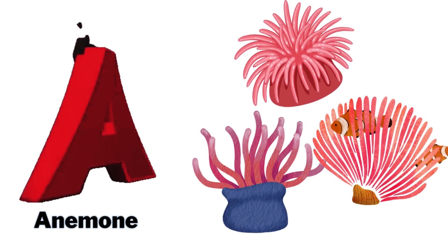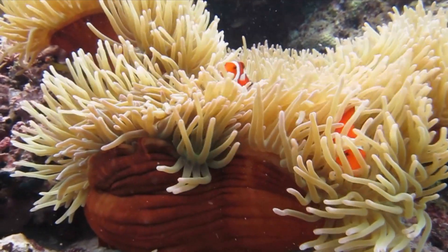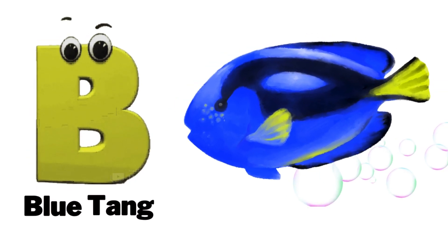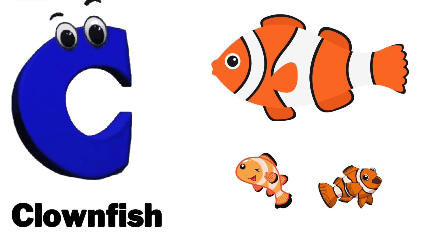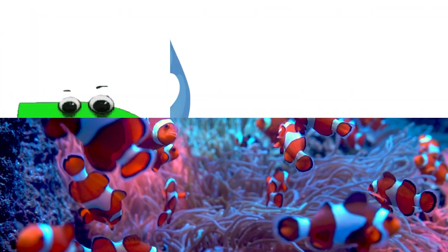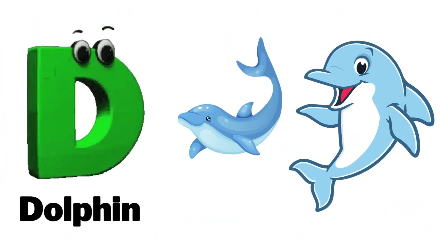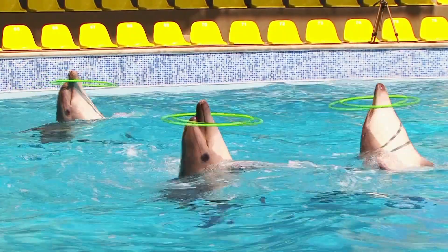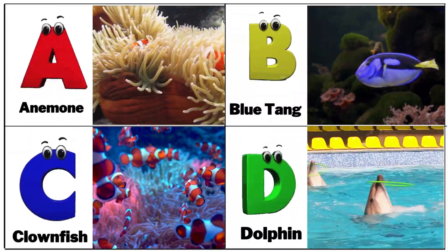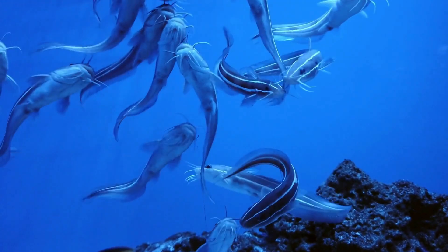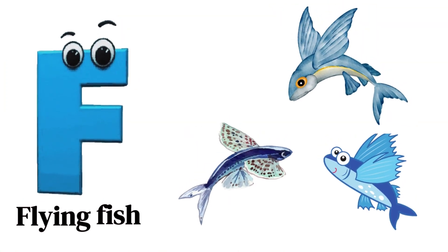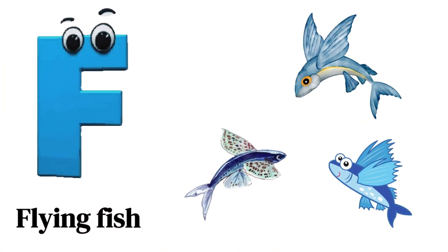A is for anemone. B is for blue tang. C is for clownfish. D is for dolphin. F is for flying fish.